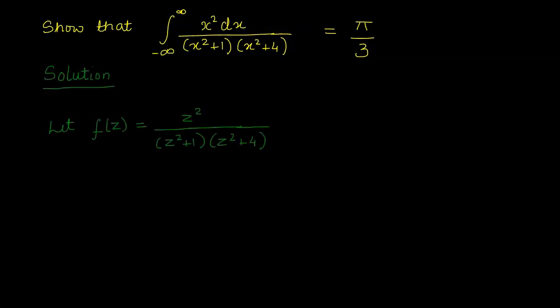First, we will assume let fz is equal to z squared upon z squared plus 1 into z squared plus 4. Here, we have substituted x with z in the integral, and the resulting value we will call function fz. Now this fz is in rational function form, that is pz upon qz, where pz is the polynomial function z squared, and qz is also a polynomial function, that is z squared plus 1 into z squared plus 4.